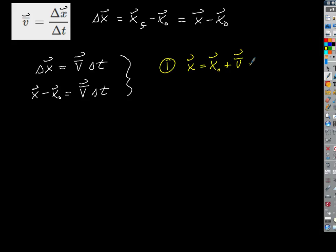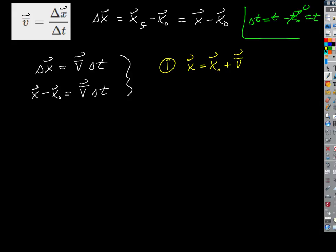Delta-t, if we're starting the stopwatch at zero, is really just t. Because delta-t equals t minus t-naught, and t-naught means time at time zero, which is zero. So t minus zero is just t. We can just write this as initial position plus average velocity times time. So there's a kinematics equation that allows us to do things like solve sample problems.